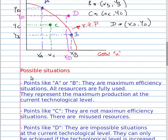Points like A or B are maximum efficiency situations. All the resources are fully used. They represent the maximum production at the current technology level.